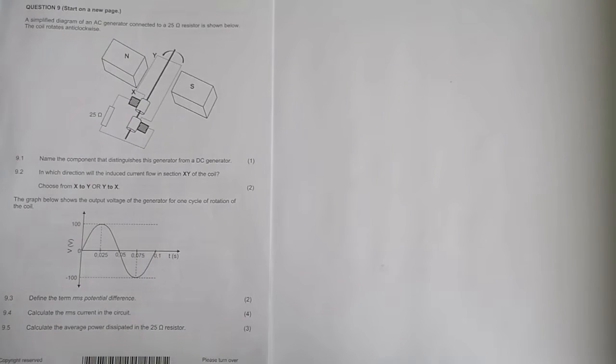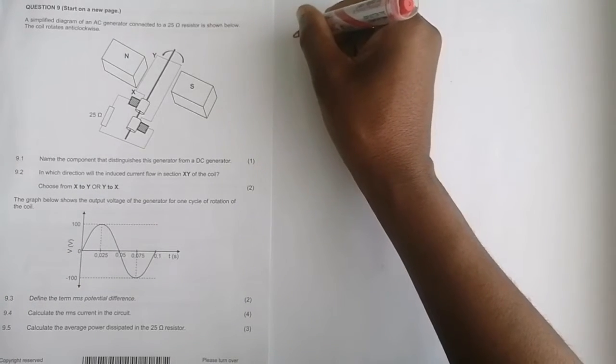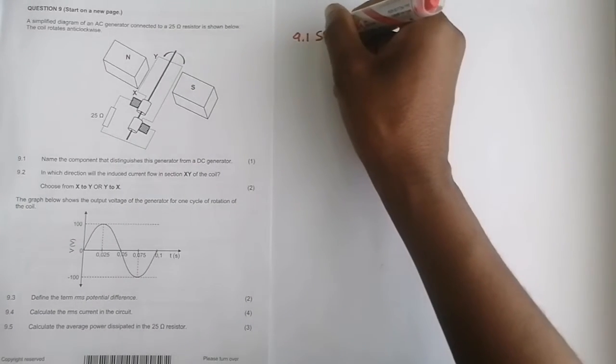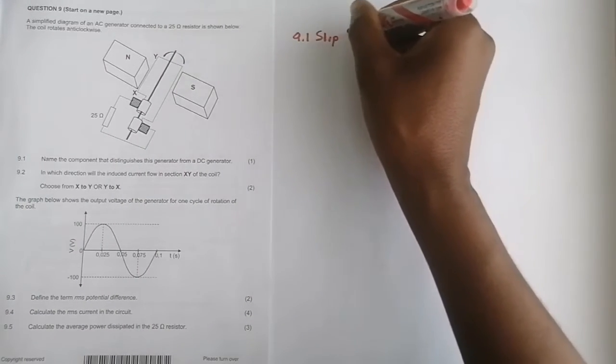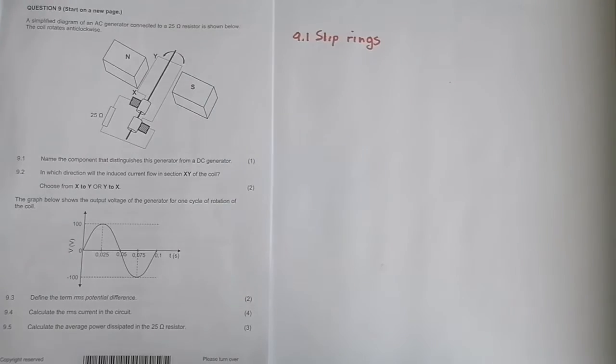They say name the component that distinguishes this generator from a DC generator. Those should be our slip rings. We can write that down. The slip rings make sure that this becomes an AC generator.